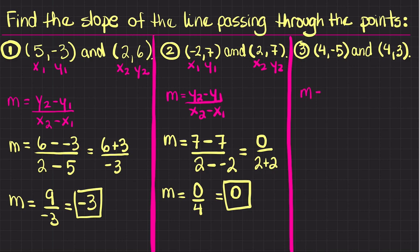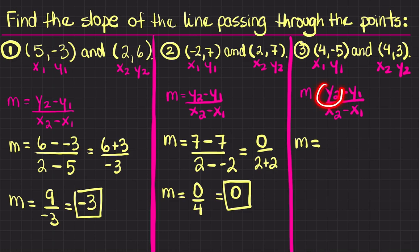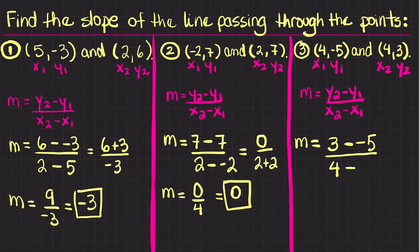For the third case, again I'm going to write the formula — y2 minus y1 divided by x2 minus x1 — so you can start remembering it. I'm going to label my points and start plugging in. m is equal to y2, which is 3, so 3 minus y1, which is negative 5. Again I have two negatives in a row, which is a positive, divided by x2, which is 4, minus x1, which is also 4.